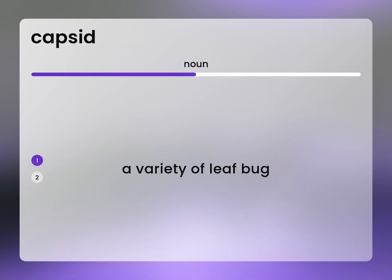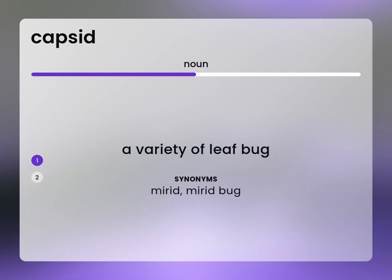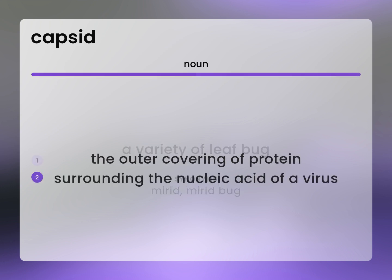A variety of leaf bug. Myriad. Myriad bug. The outer covering of protein surrounding the nucleic acid of a virus.